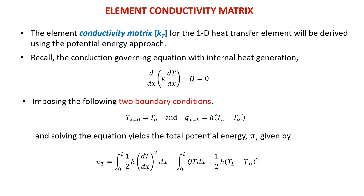The element conductivity matrix KT for the 1D heat transfer element will be derived using the same method as in previous chapters, which is the potential energy approach. Recall back, the conduction governing equation with internal heat generation is given by this equation. By imposing the two boundary conditions — temperature at x equal to 0 is equal to T0, and the heat flux at x equal to L is equal to H times TL minus T ambient — and solving the equation yields the total potential energy given by this equation.